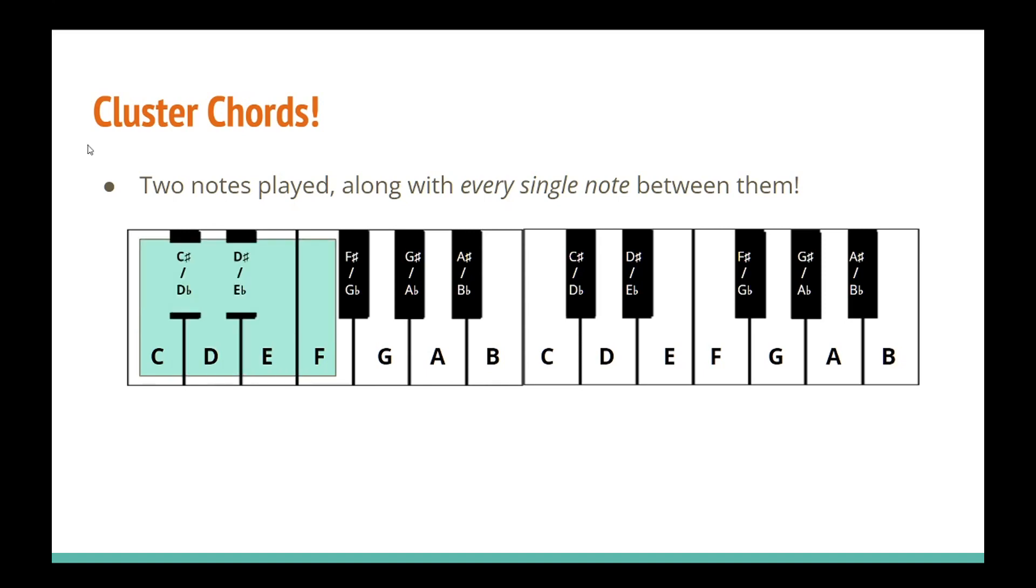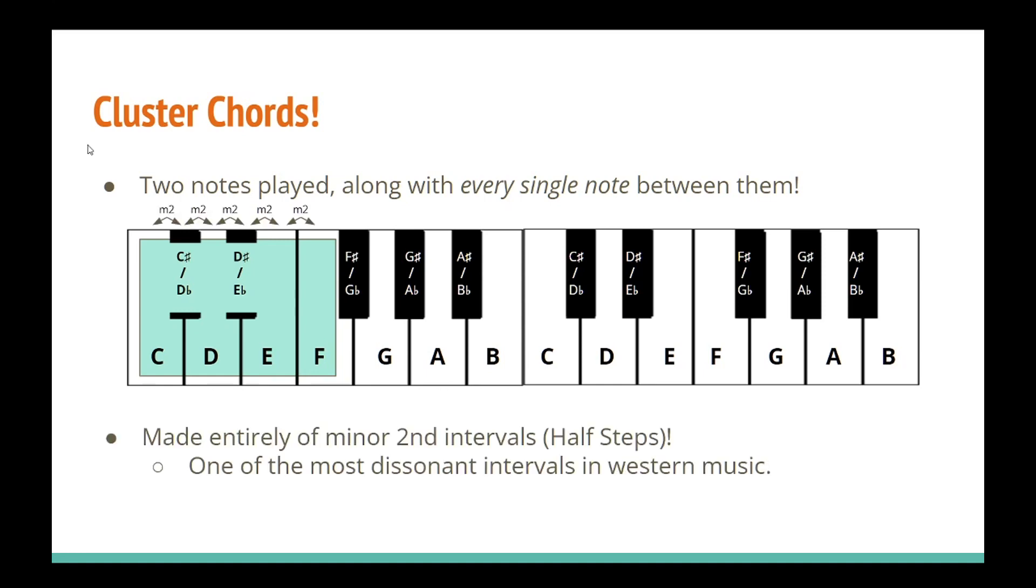Then I just need to play every single note between C and F. So a cluster chord of C to F would include C, C sharp, D, D sharp, E, and F. Since these chords are made entirely of minor second intervals, it makes sense why they sound so dissonant. After all, the minor second interval is arguably one of the most dissonant intervals in western music, if not the most dissonant interval. So stacking a whole mess of them together isn't exactly going to give you a pure and pretty sound.